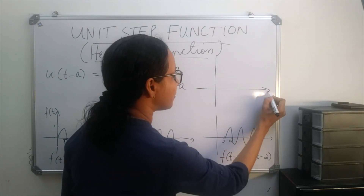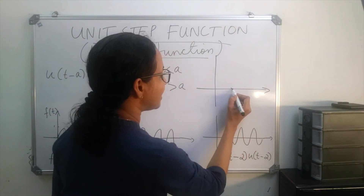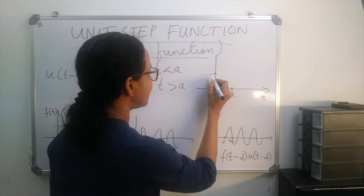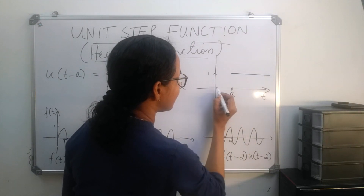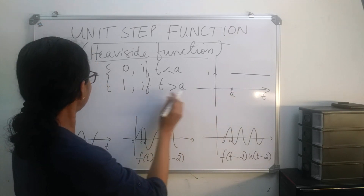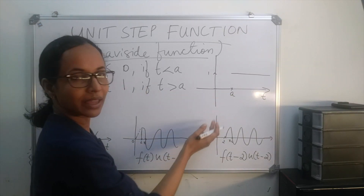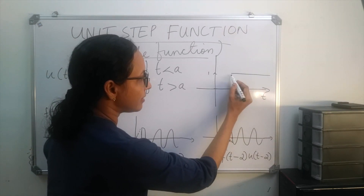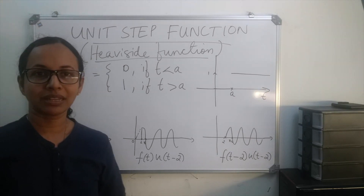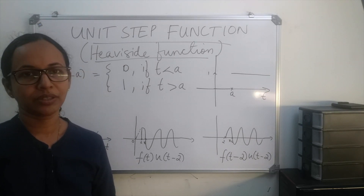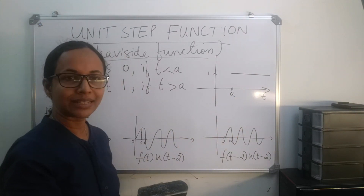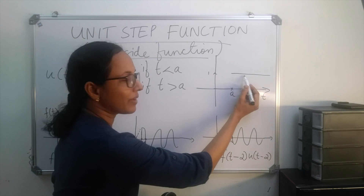We can draw its graph: let point a be marked on the t-axis and let 1 be marked on the vertical axis. When t is less than a, the value is 0, and when t is greater than a, the value of the function is 1. We can consider the unit step function as a switch which is off up to t equal to a, and after that it is on with constant value 1.